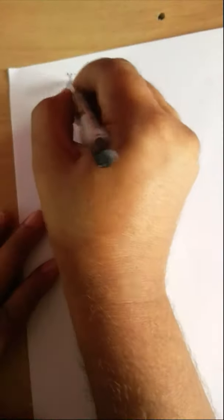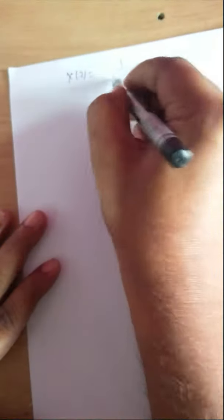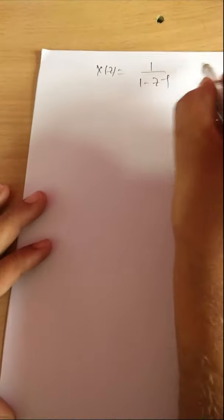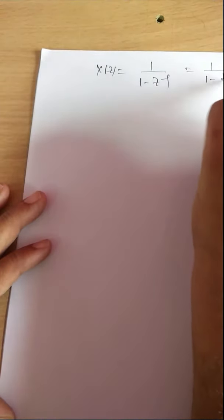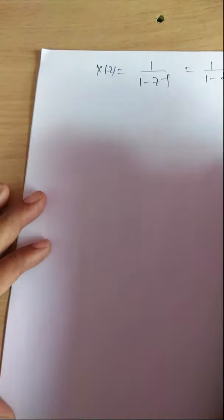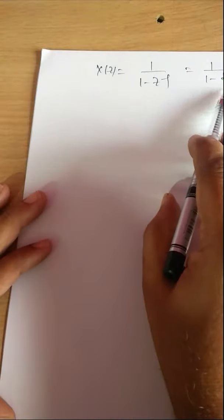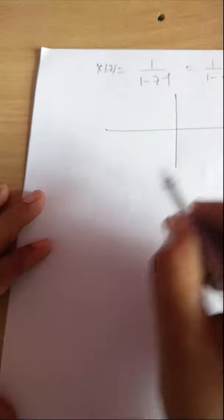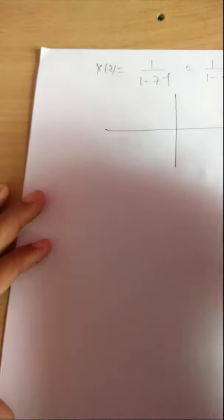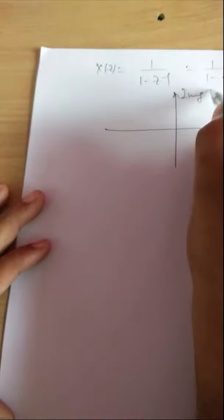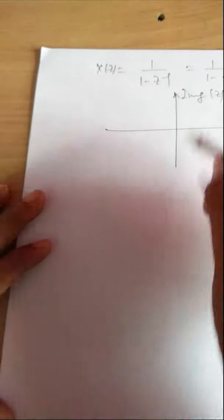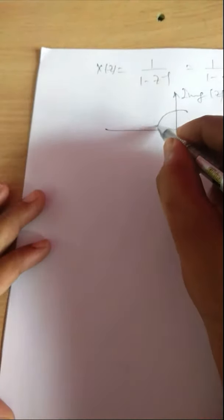Now let us find the poles and zeros. X(z) = 1/(1 - Z^(-1)) = 1/(1 - 1/Z). Taking Z as the LCM, this becomes Z/(Z - 1). Now, what is the ROC? We have |Z| > 1. Drawing a unit circle with the origin as center and radius 1, the ROC is the region |Z| > 1 — outside the unit circle.